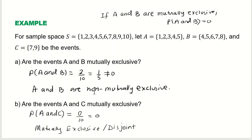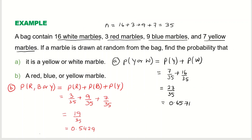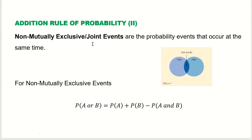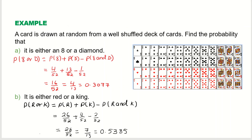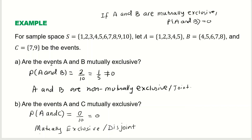So in this video, we explored the addition rules of probability: first, the case for mutually exclusive or disjoint events with a marble example; then non-mutually exclusive or joint events with a card example. Finally, we established that for events to be mutually exclusive, probability of A and B must be 0, and verified this condition using a sample space example. I hope this is helpful — thank you so much for watching.